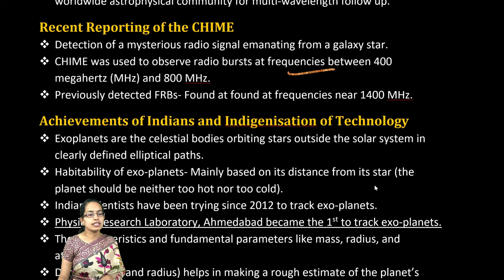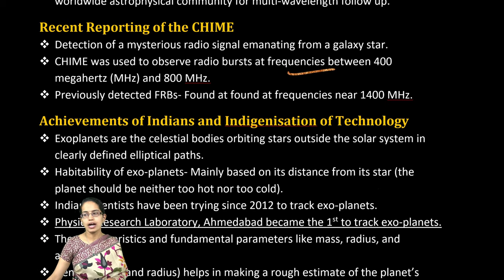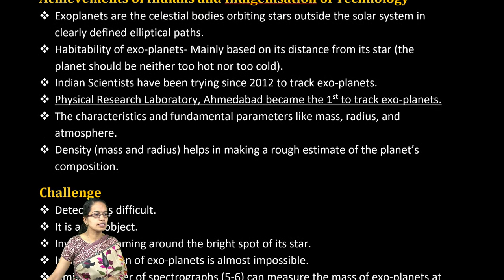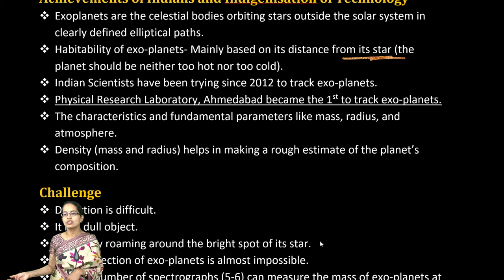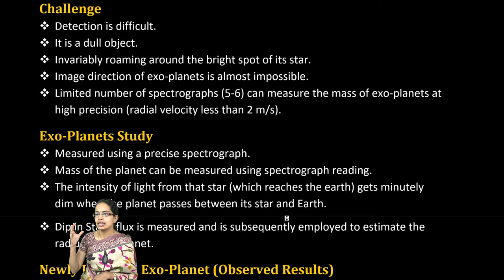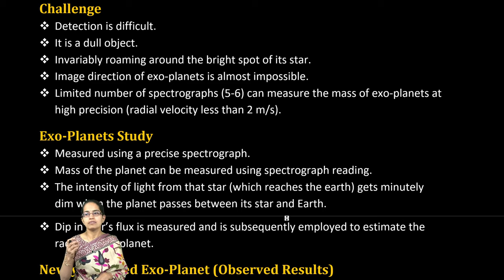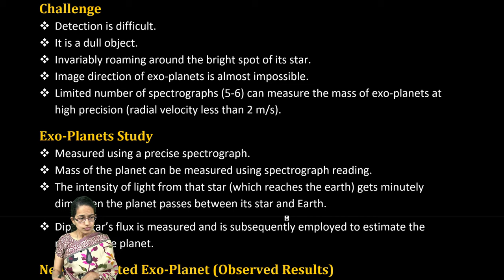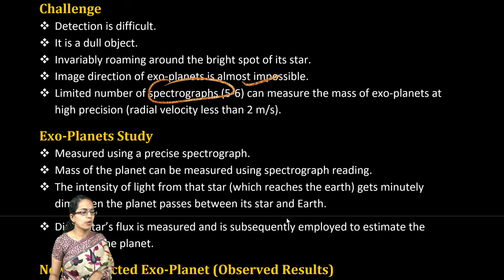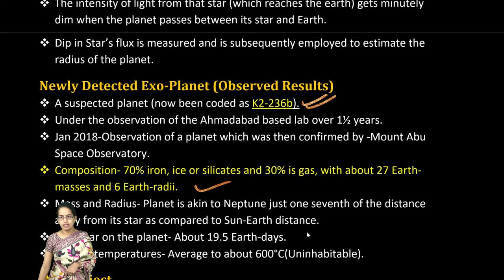In India, there has been indigenization of various technologies. The Physical Research Laboratory (PRL) at Ahmedabad is the first to track exoplanets. Exoplanets are far from their host stars and are neither too hot nor too cold, but there are definite challenges in studying them. There is a limited number of spectrographs that can measure the mass of exoplanets with very high precision, making the use of spectrographs an important topic.